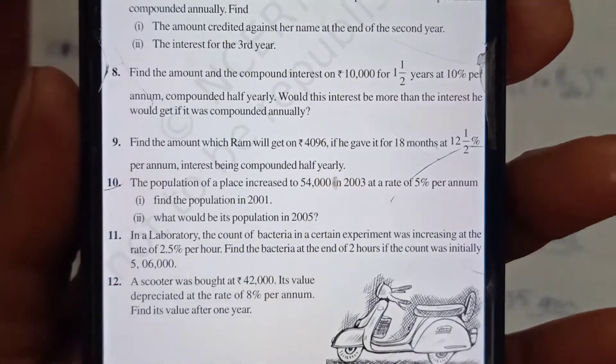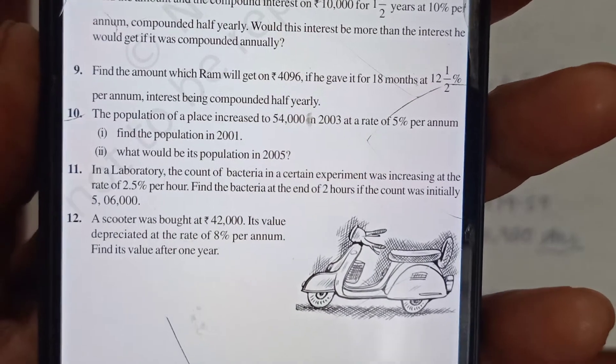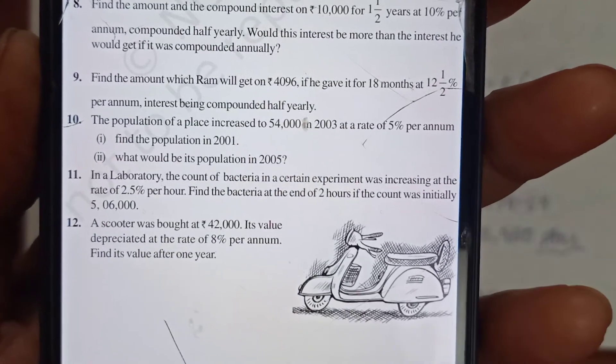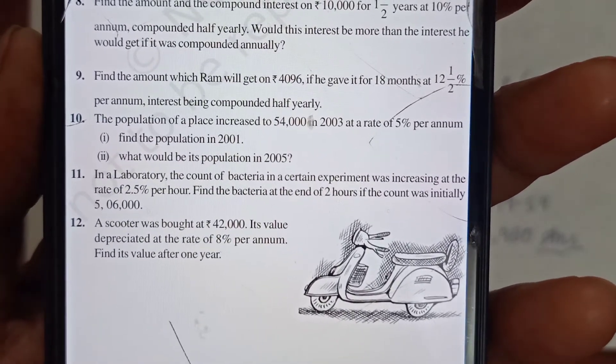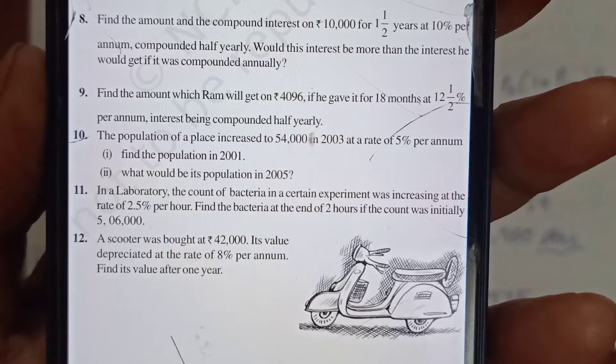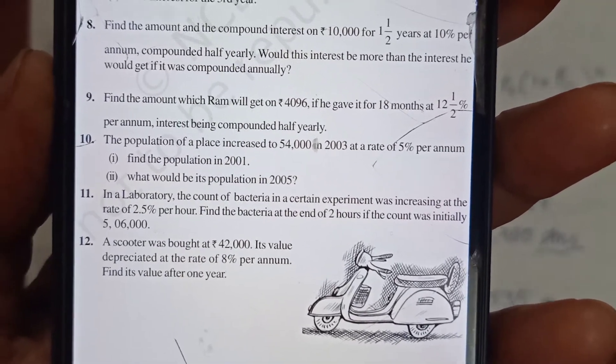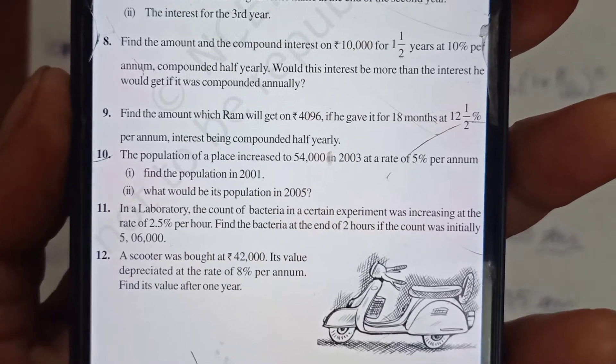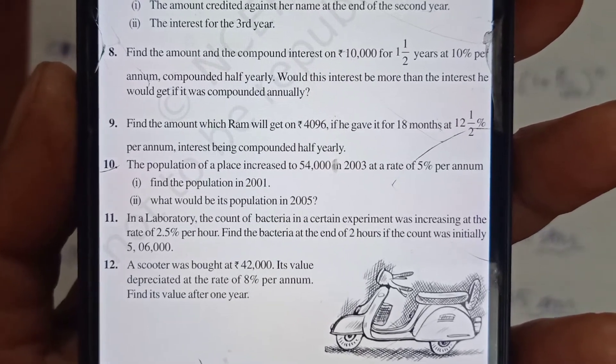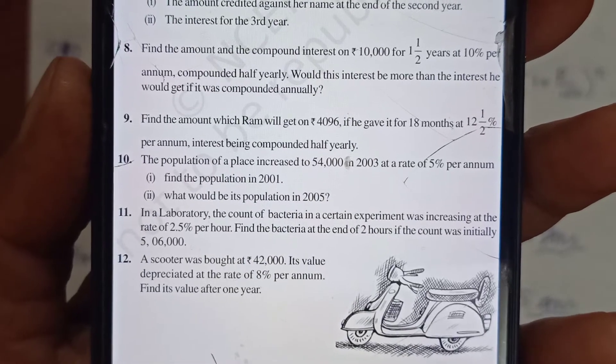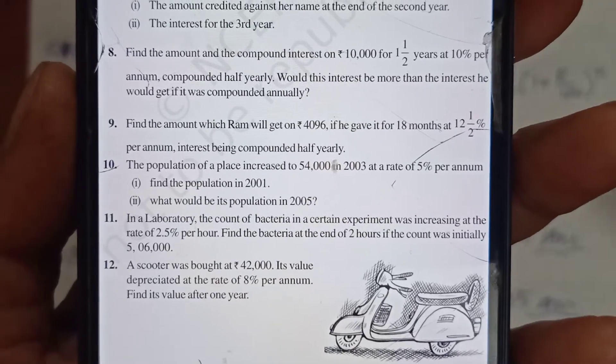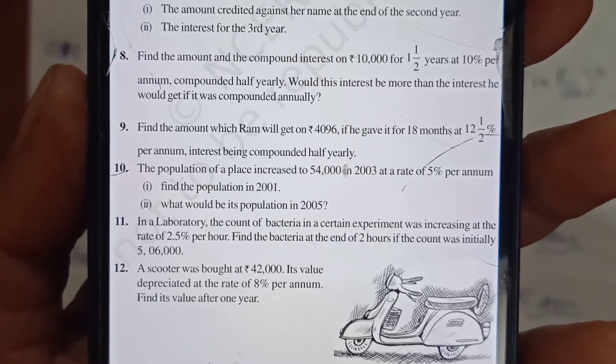Question 10: The population of a place increased to 54,000 in 2003 at the rate of 5% per annum. Find the population in 2001 and also in 2005. Two years back what would the population have been, and two years after what would it be? For growth or decrease rate given, we can use the compound interest formula. Amount means original amount; amount comes after, principle comes before.